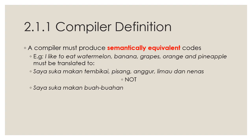An important concept in compiler is semantically equivalent. It means that the translation of the original input must have a similar meaning word by word. So for example, 'I like to eat watermelon, banana, grapes, orange, and pineapple' must be translated to 'saya suka makan tembikai, pisang, anggur, limau, dan nenas' — and not 'saya suka makan buah-buahan' even though the meaning might be similar.